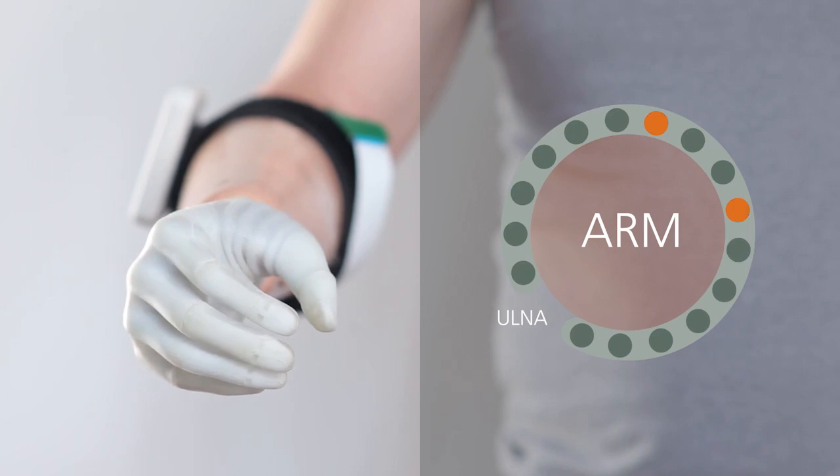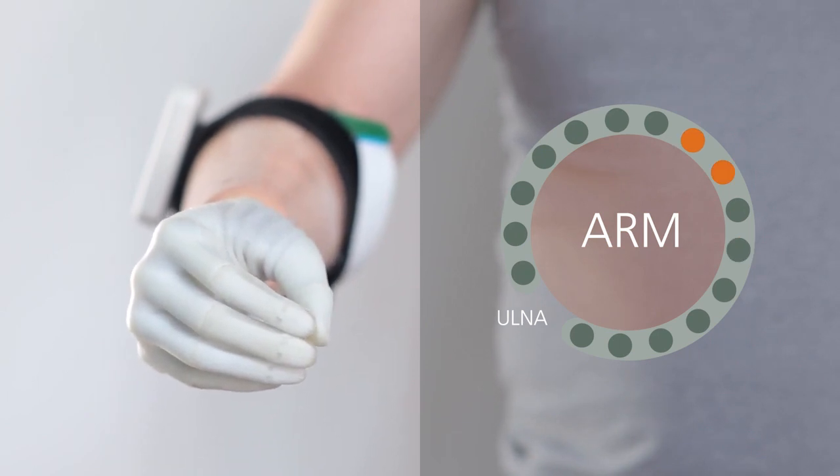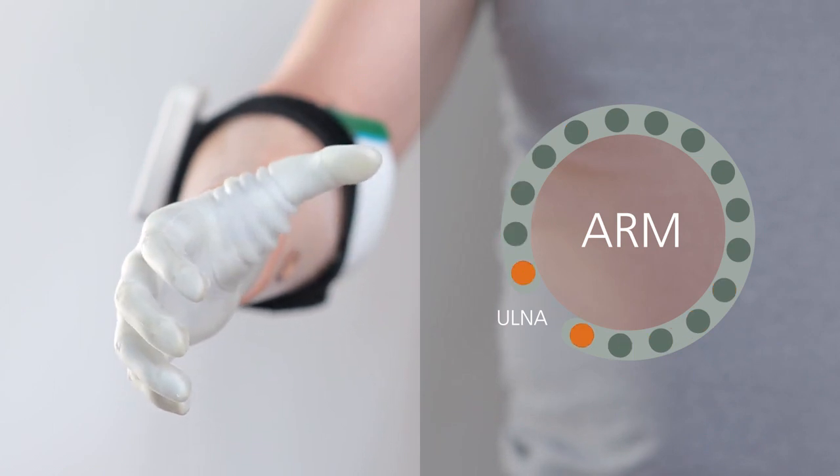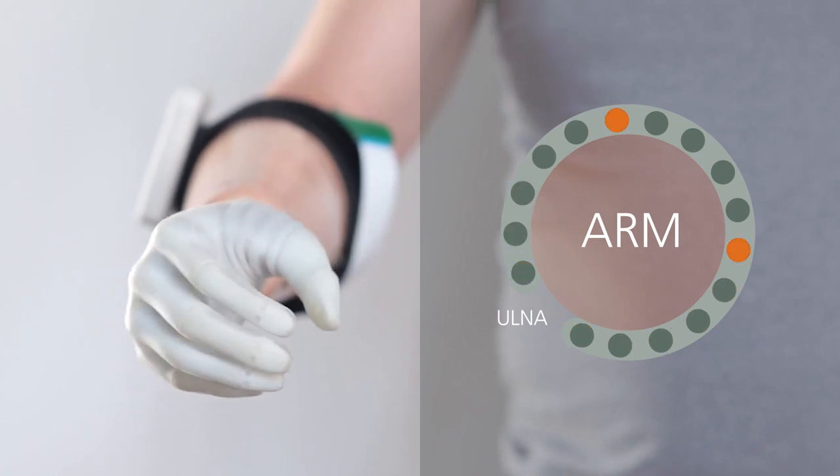The core of the MaxSense system is the intuitive and easy-to-learn electro-tactile feedback that resembles the performed movement. Hand opening is coded by two active electrode pads moving away from each other.